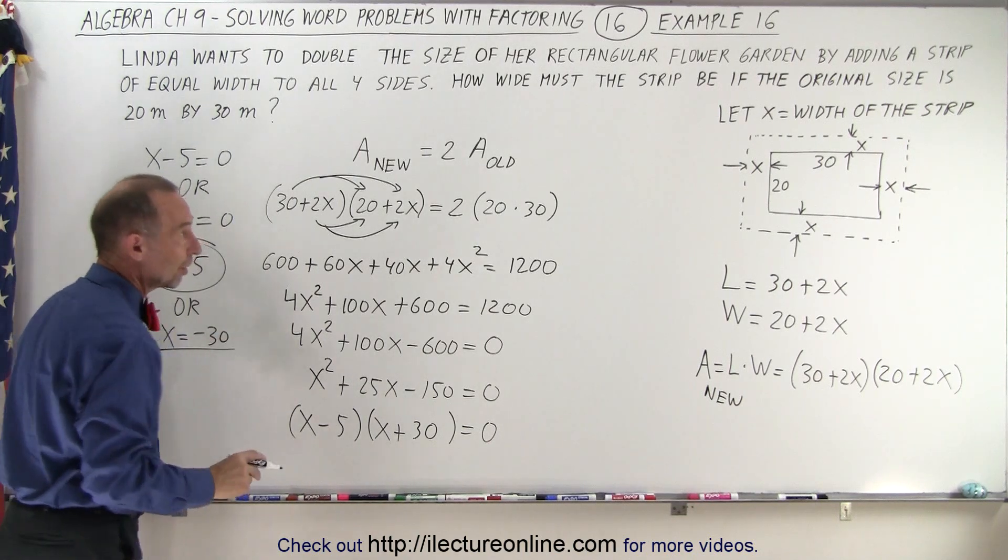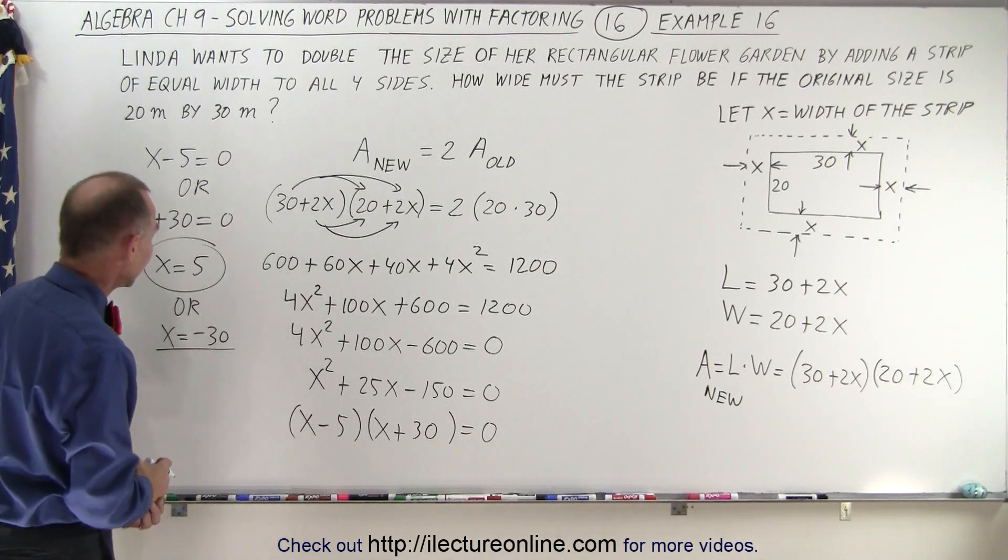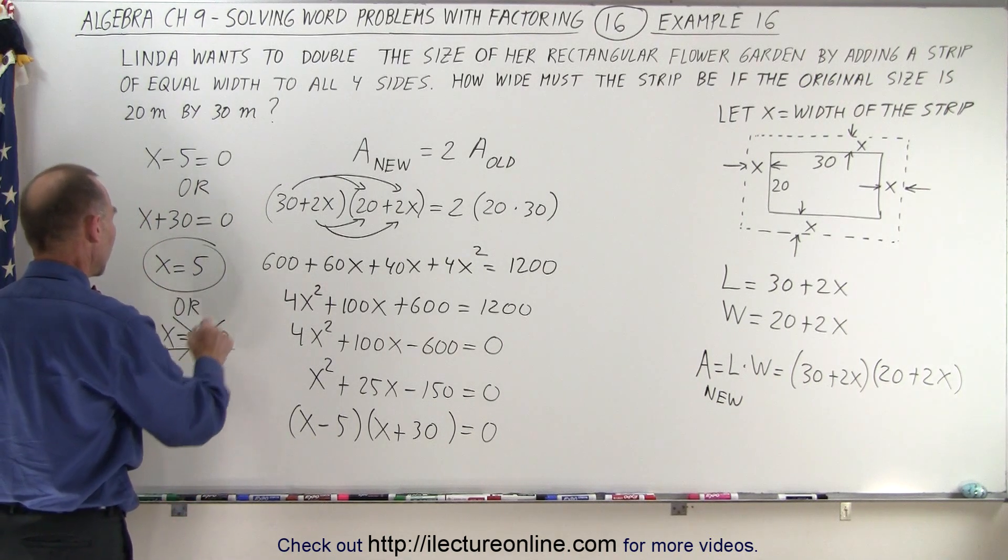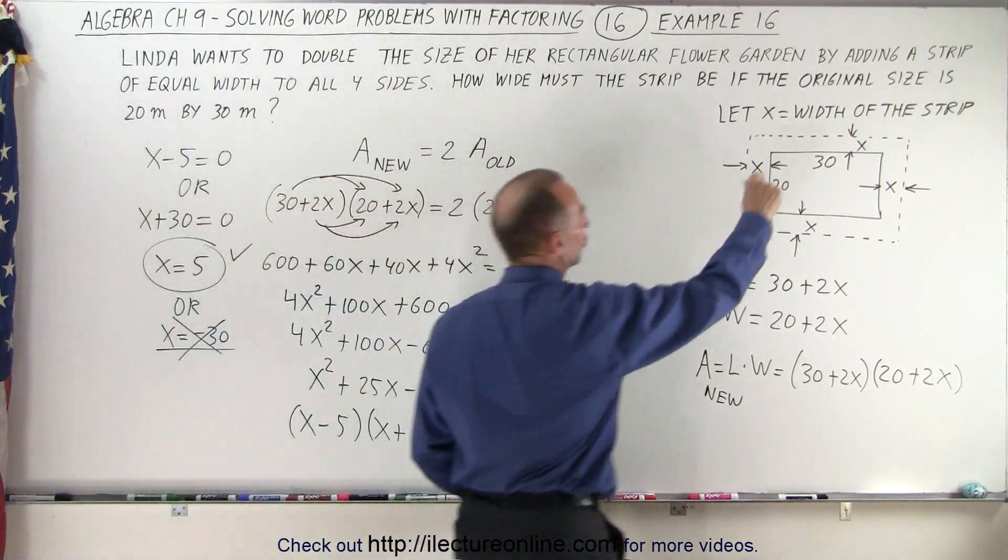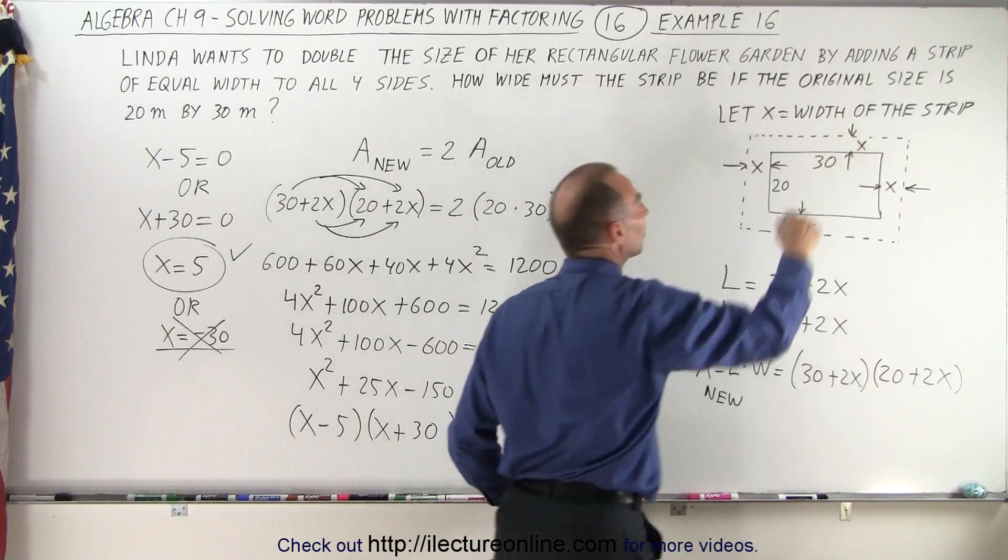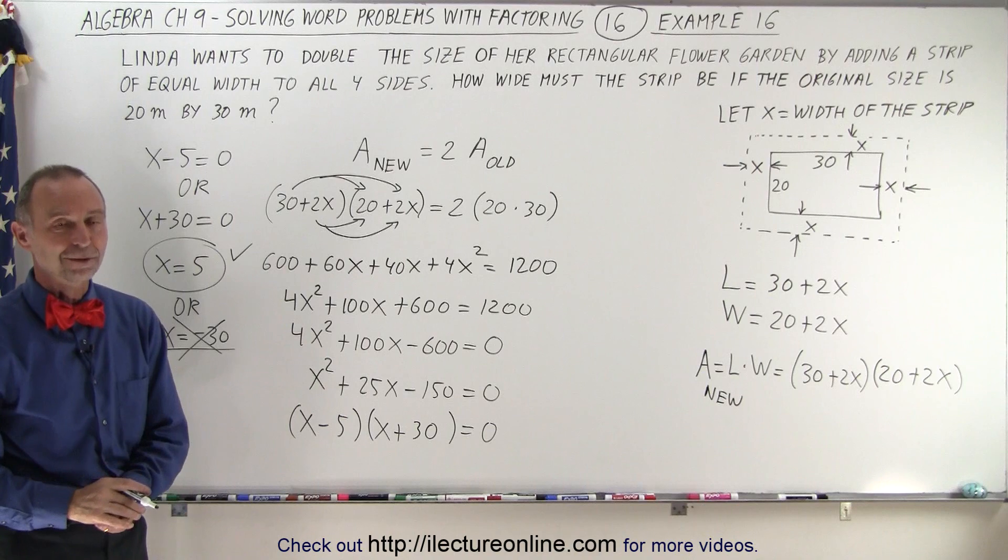Now negative 30 is not a good option because you can't add a negative 30 meters to each side. So that's not a valid option. This will be the valid option. In other words, if we add a strip five meters on each side, we then will double the nest garden and that is how it's done.